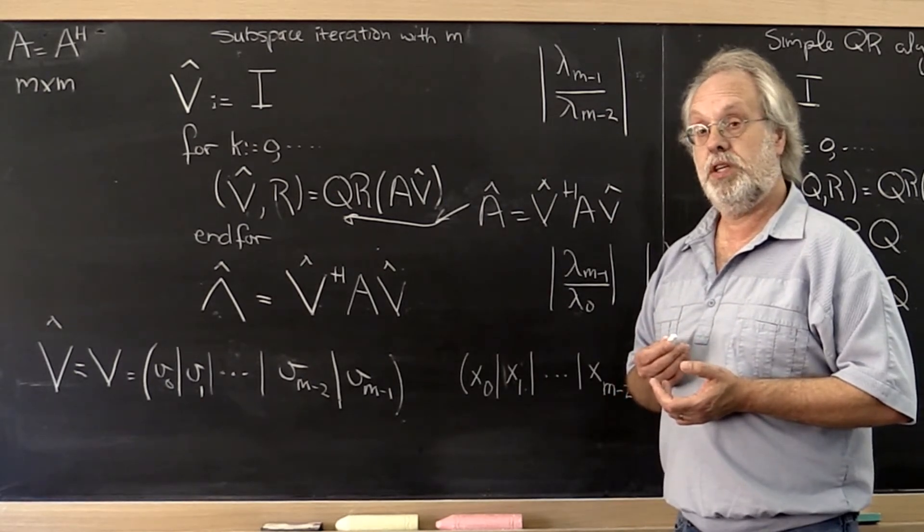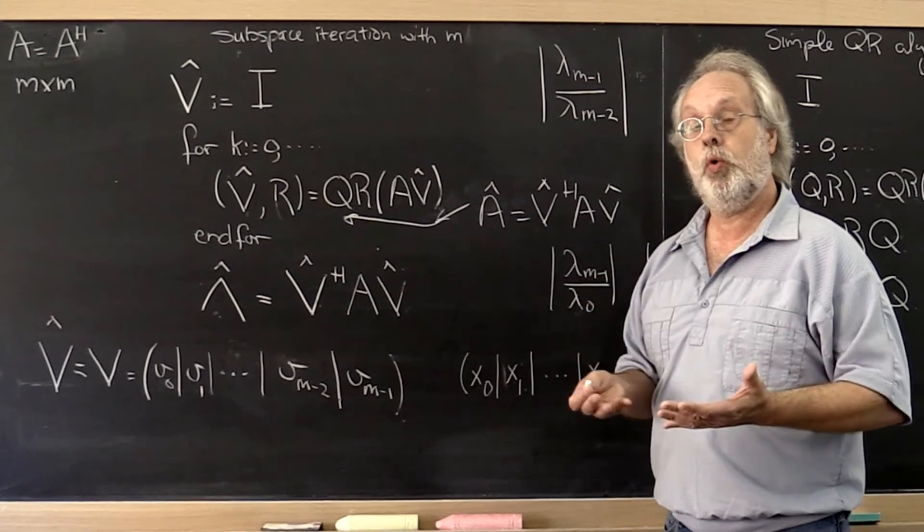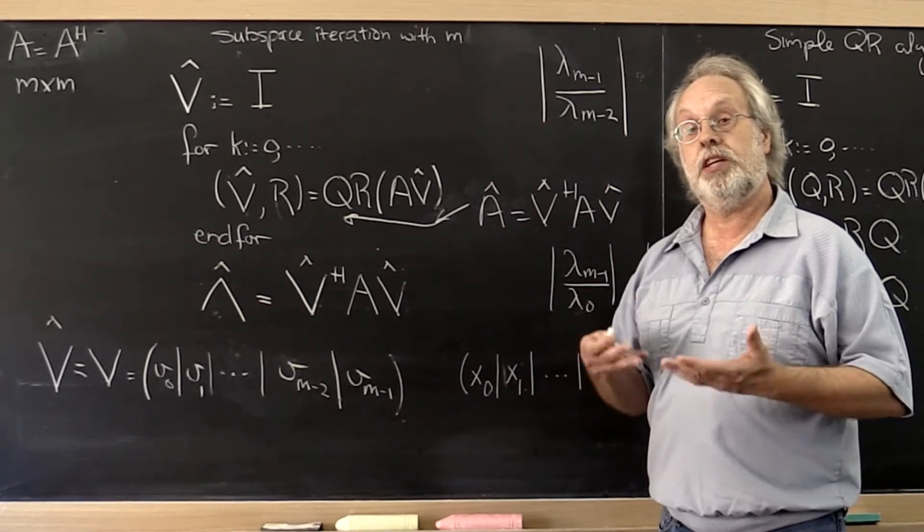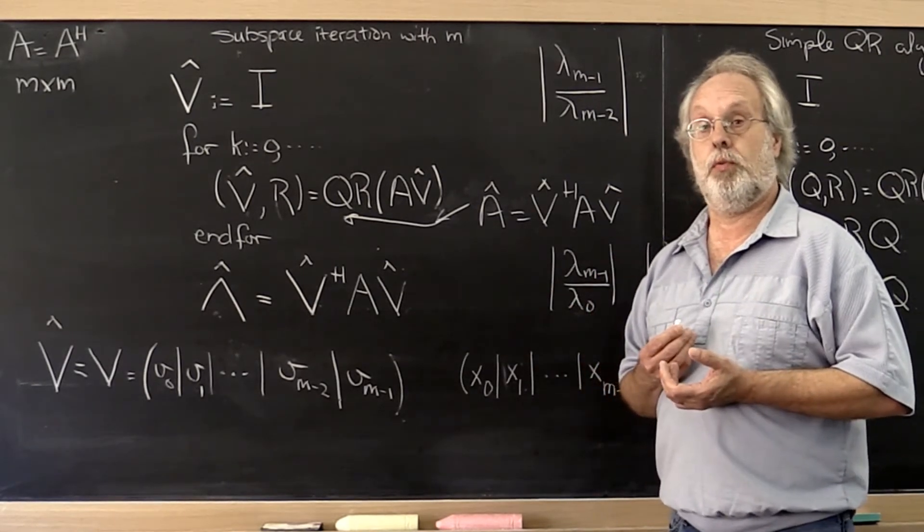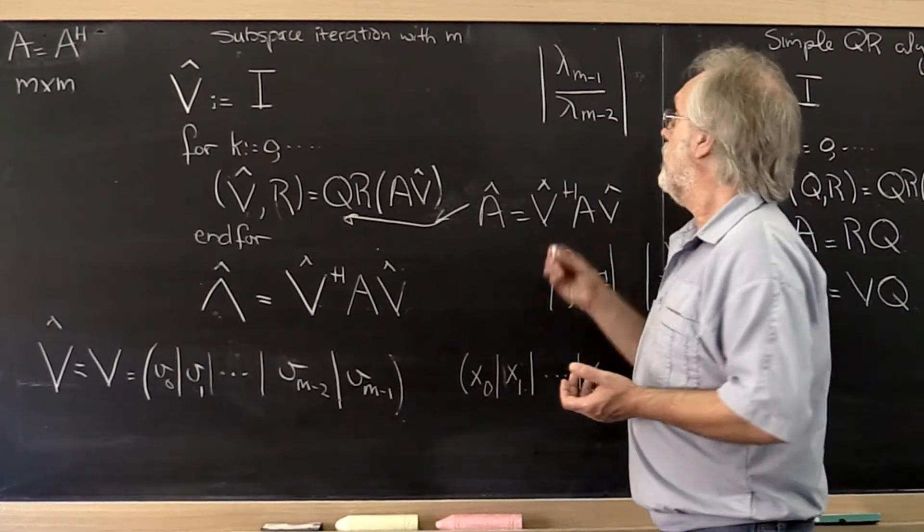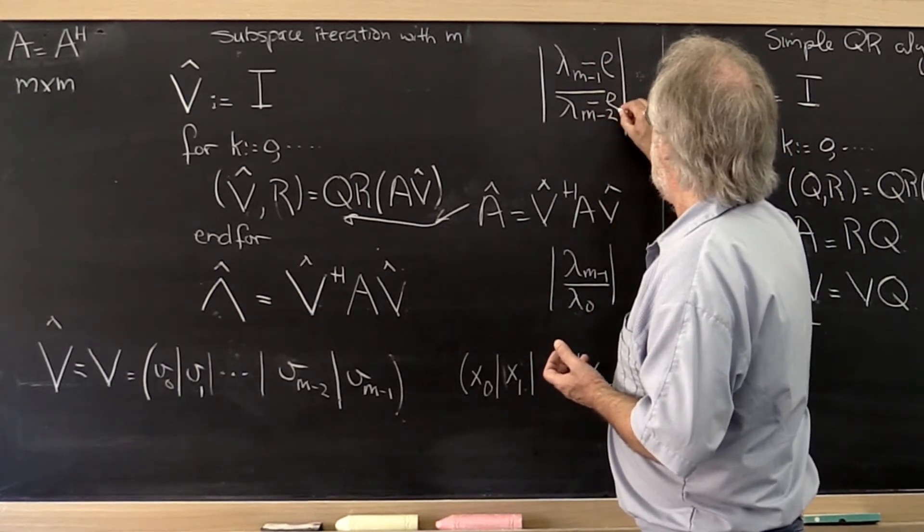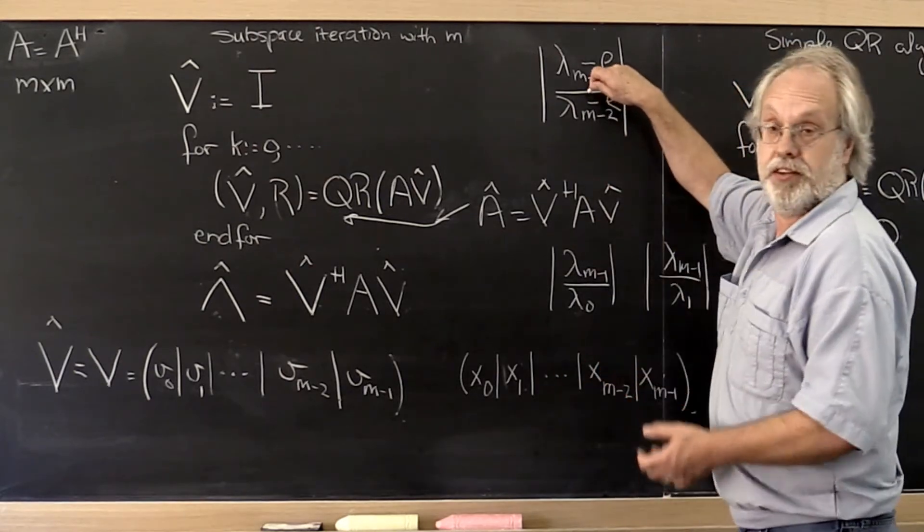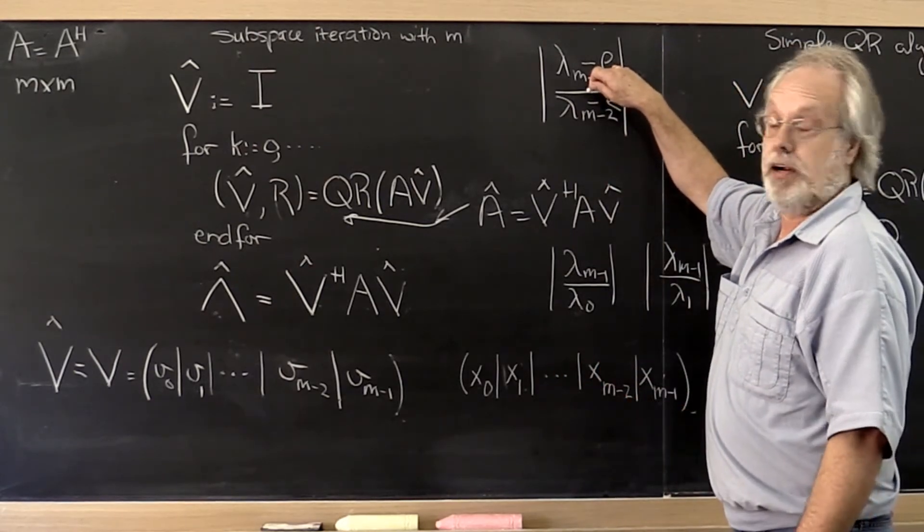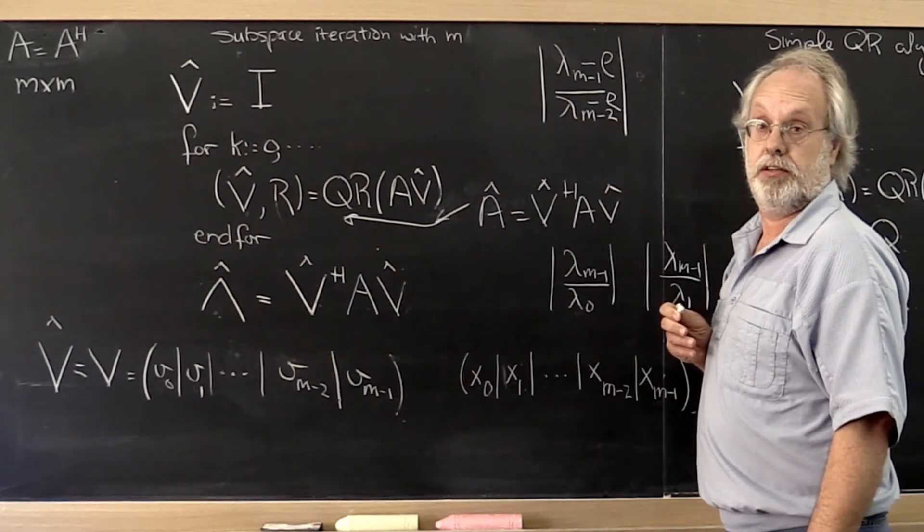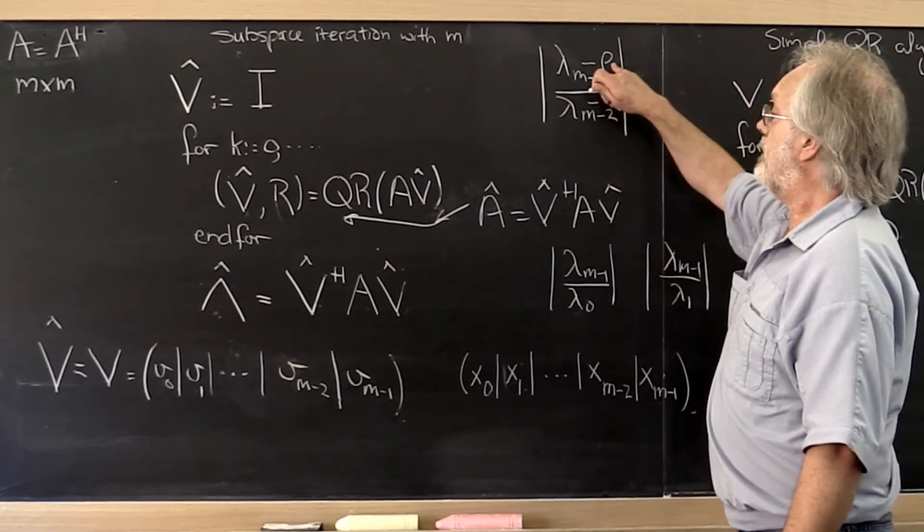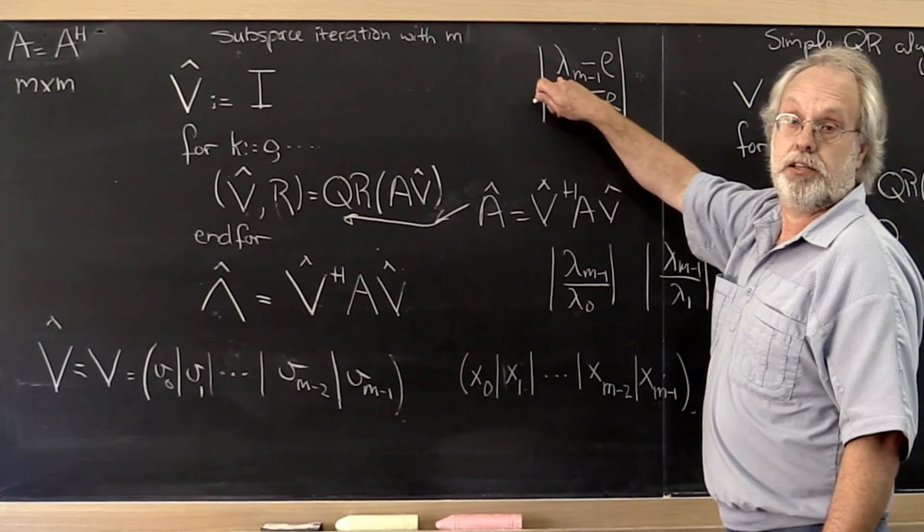And then we said, if we know a value that's close to the smallest eigenvalue, then we can accelerate that by subtracting off a shift as we do our inverse iteration that is close to lambda m-1.